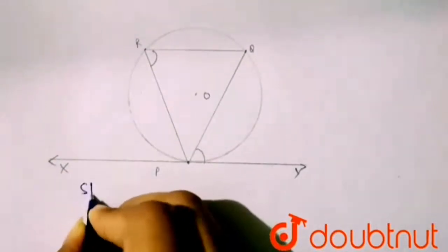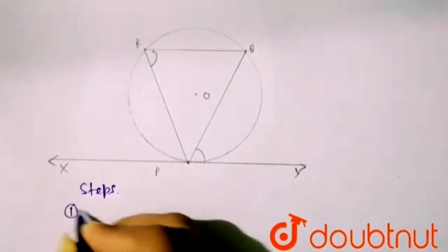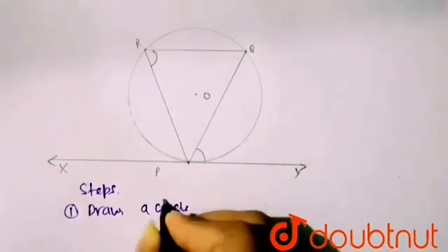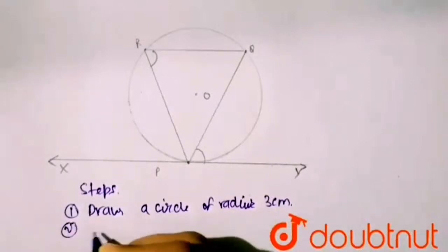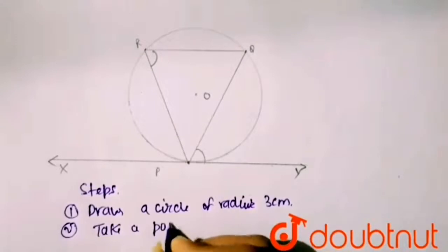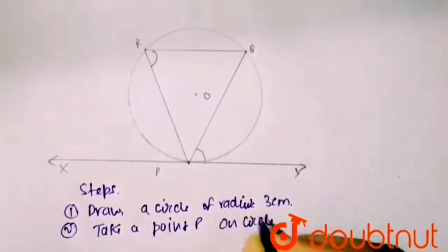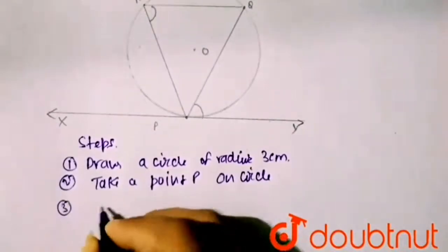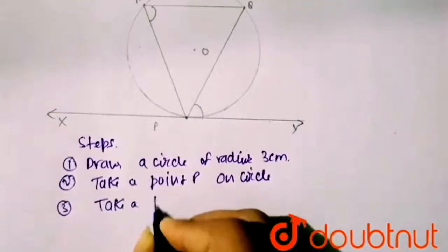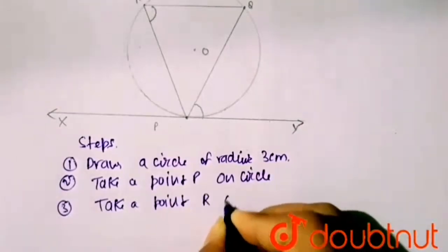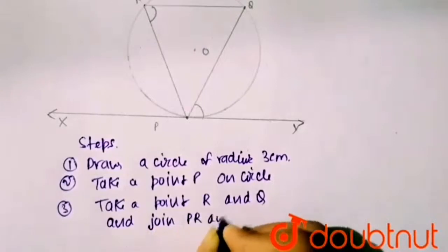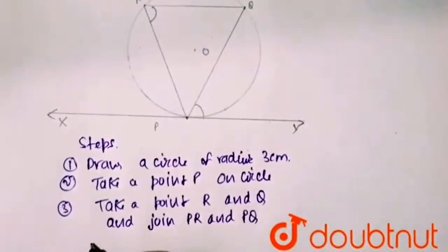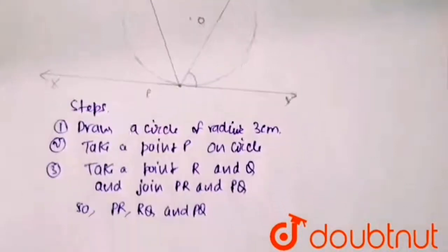This is the required figure, and here I am writing the steps. First, draw a circle of radius three centimeters. Take a point P on the circle. Then take points R and Q, and join PR, RQ, and PQ — these are chords of the circle.